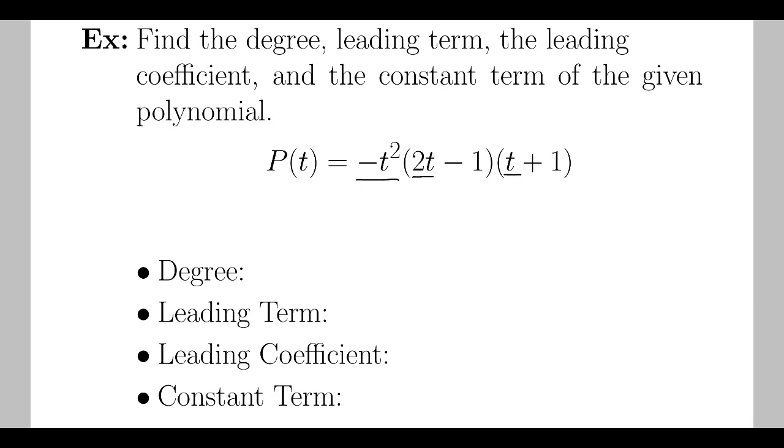I'll multiply those together. Negative t squared times 2t is negative 2t cubed times t, negative 2t to the fourth power.